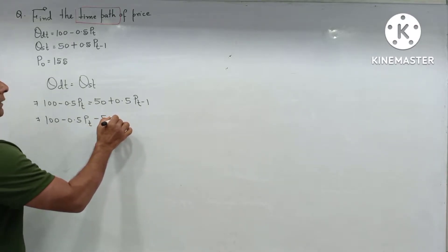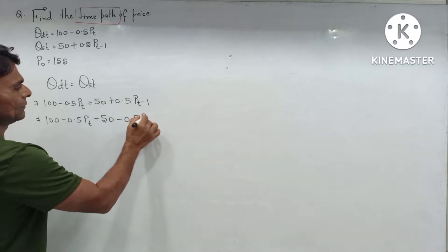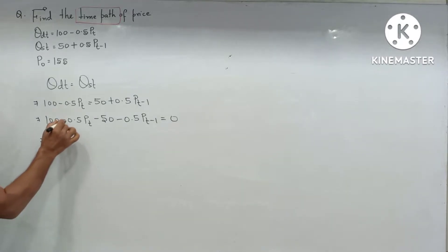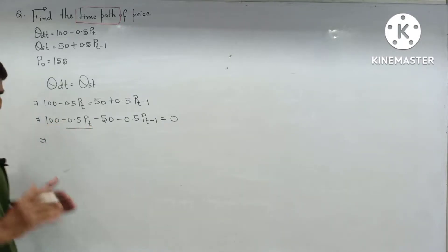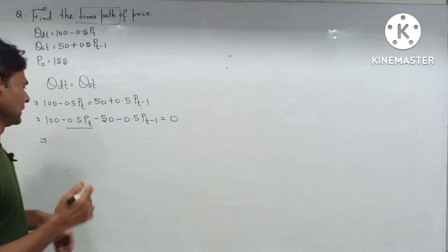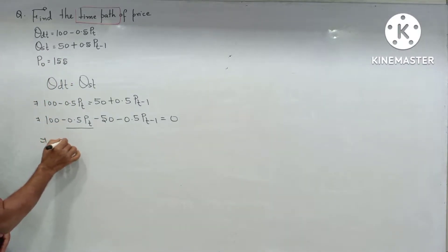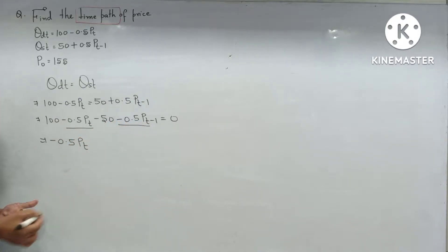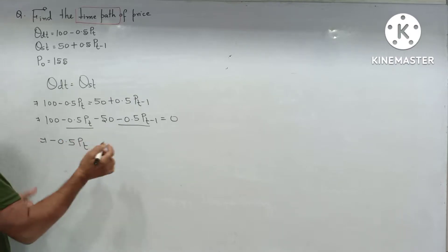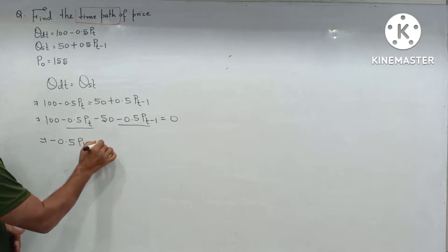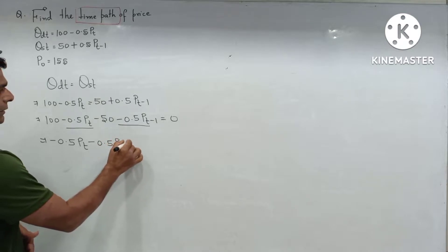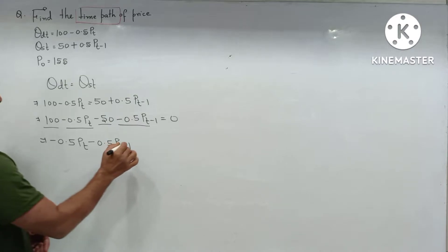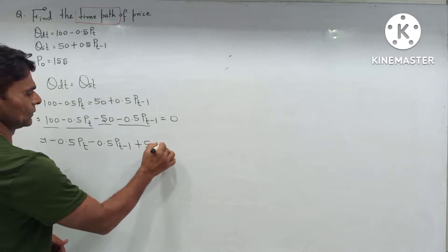After rearranging, we get: -0.5·p(t) - 0.5·p(t-1) and 100 - 50 equals 0. So we are left with 0.5·p(t) + 0.5·p(t-1) equal to 50.